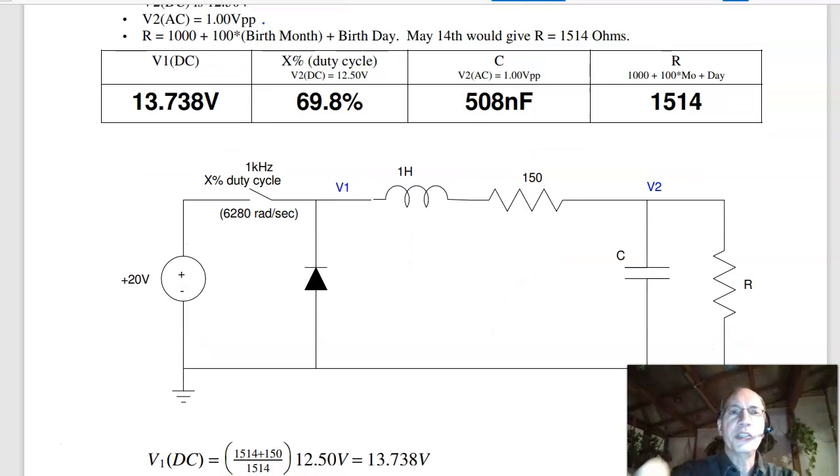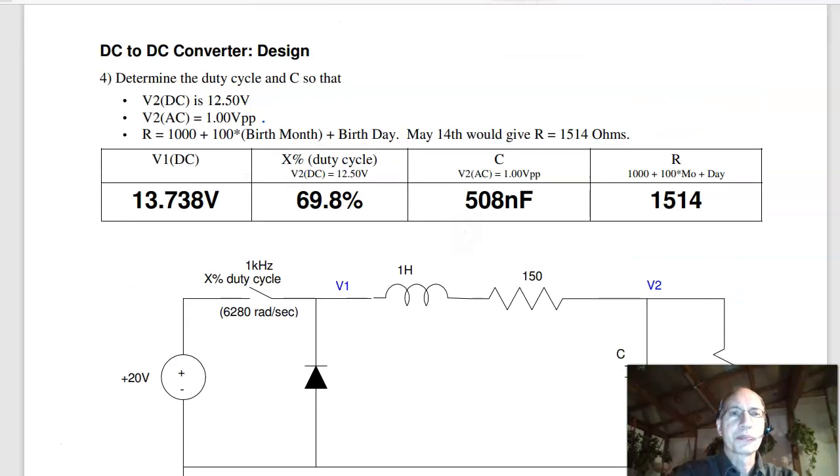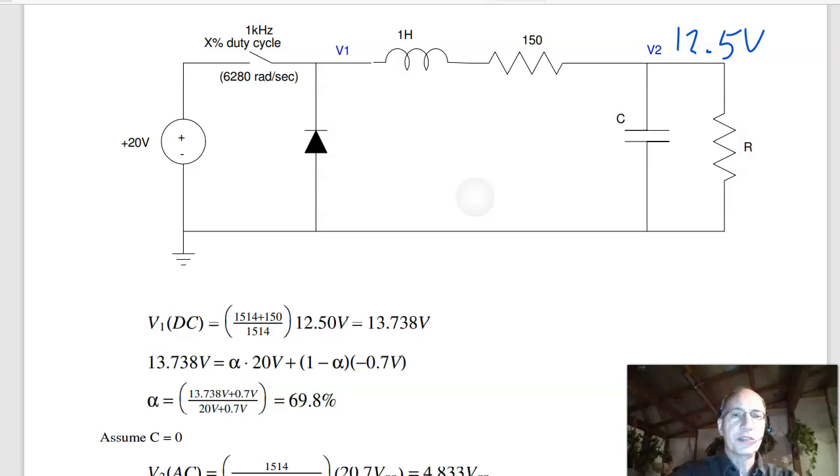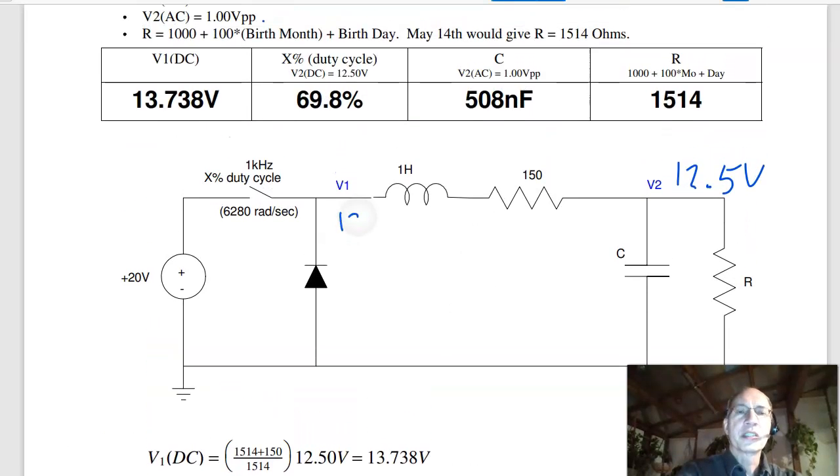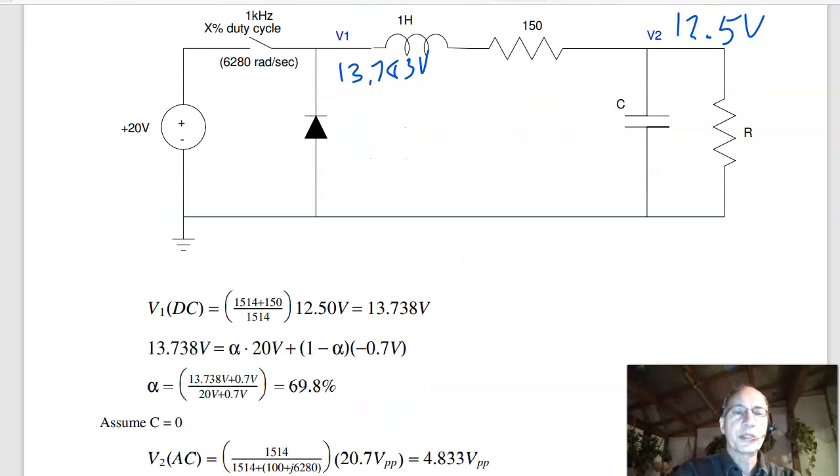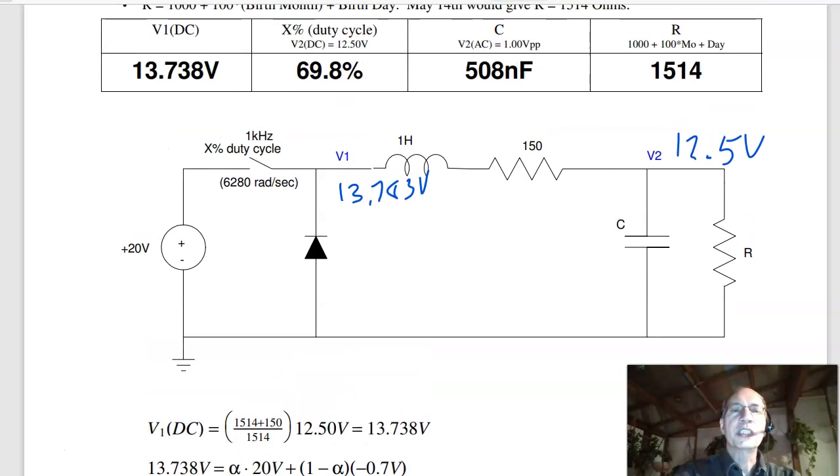Let's start with the DC term. At DC, if V2 is 12.5 volts, by voltage division, it's R over R plus 150 times V1. Solve for V1, and I get V1 is 13.783. I now want to pick the duty cycle to give you that voltage. And so the DC voltage, 13.783, is your duty cycle times 20, 1 minus the duty cycle times minus 0.7. Do some algebra. It's the desired voltage, plus 0.7 over the input voltage, plus 0.7, 69%. So 69% sets the DC voltage.